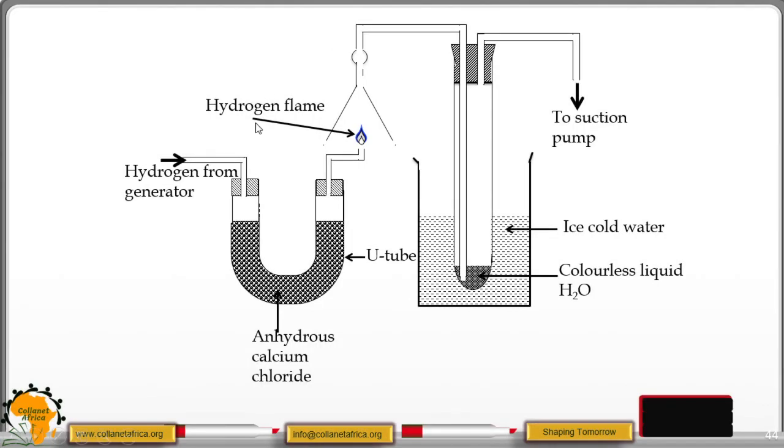This is the setup for the burning of hydrogen in air. We have the hydrogen gas from the generator. It must contain some moisture. So you have to pass it through this tube apparatus. In this tube apparatus, we have the anhydrous calcium chloride. This anhydrous calcium chloride removes the water from the hydrogen gas.